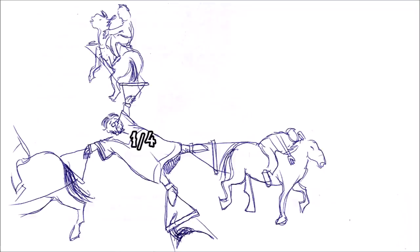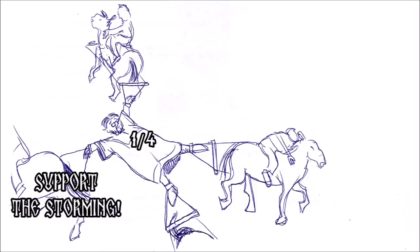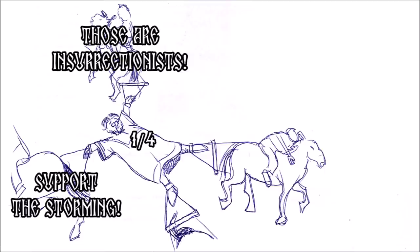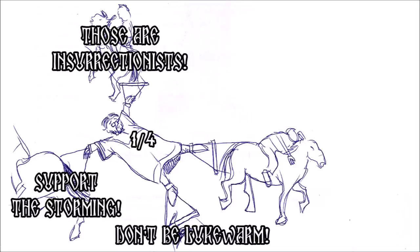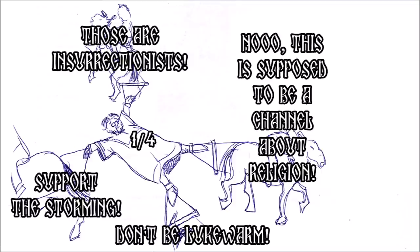In the middle there's me, and there are four horses of annoyed comments. First, people who would be angry at me supporting the storming of the Capitol Hill. Second, people who would be angry at me for opposing it. Third, people who would be angry at me for being neutral. And finally, people who would be angry at me for talking about politics.